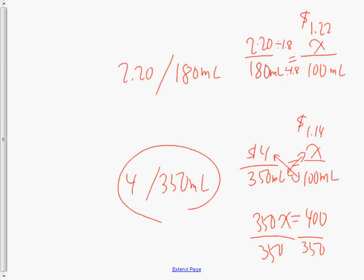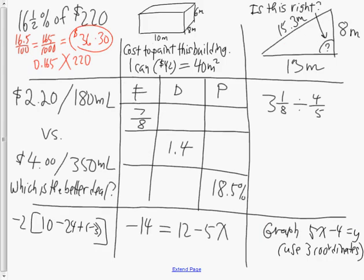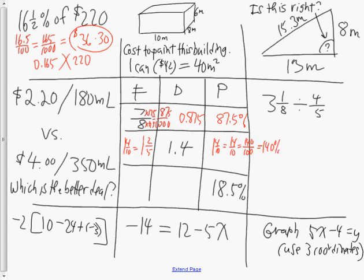The next question involves decimals. To convert seven-eighths to a decimal, you can divide 7 by 8, or create an equivalent fraction with a denominator of 1000. Multiplying 8 by 125 gives 1000, so 7 times 125 gives 875 thousandths, which as a decimal is 0.875. As a percentage that would be 87.5%. Then 1.4 is one and four-tenths, which in lowest terms is one and two-fifths, and since 1.4 is 140 hundredths, as a percent it's 140%.